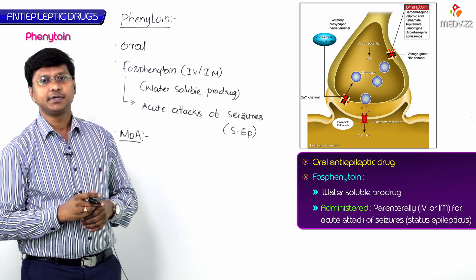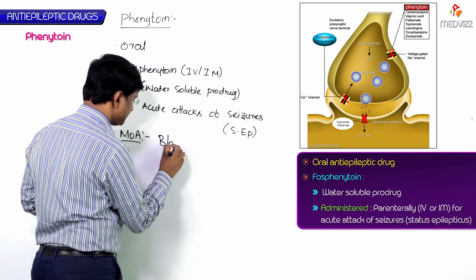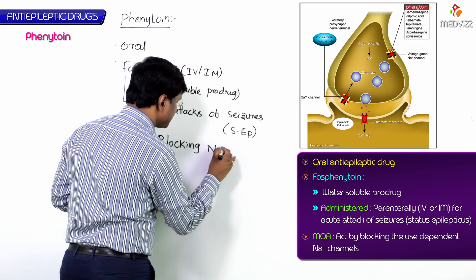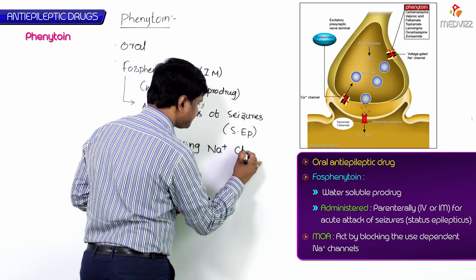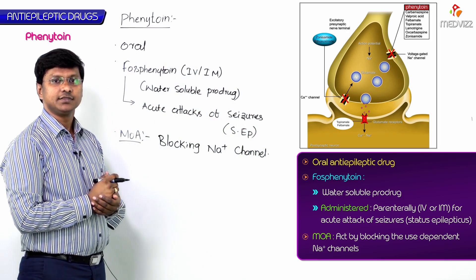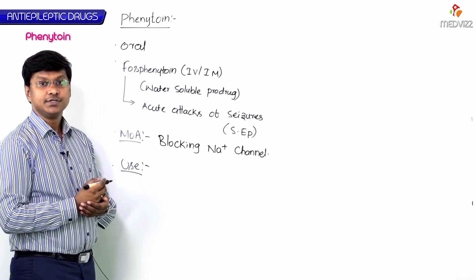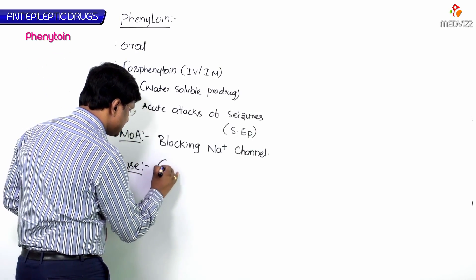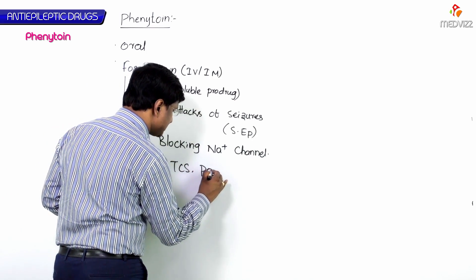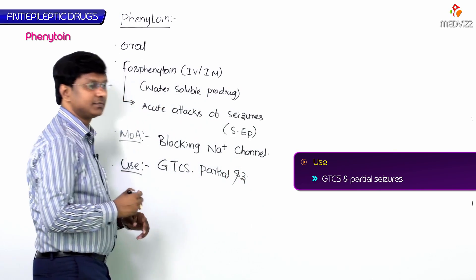The mechanism of action of these drugs is by blocking the sodium channels. Phenytoin is used in case of GTCS (generalized tonic-clonic seizures) as well as partial seizures.